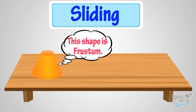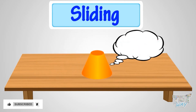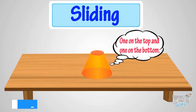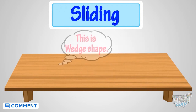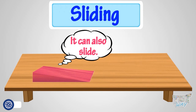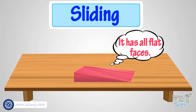This shape is a frustum. It can also slide as it has two flat faces — one on the top and one on the bottom. This is a wedge shape. It can also slide as it has all flat faces.